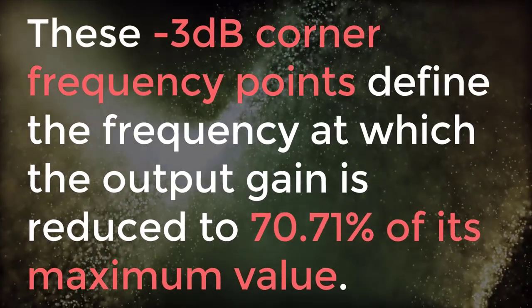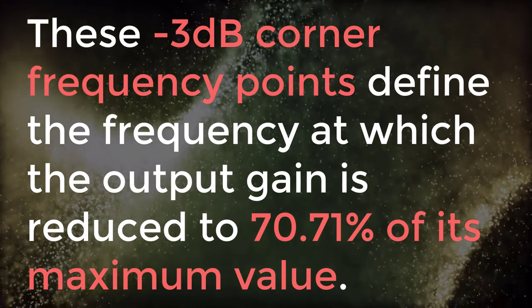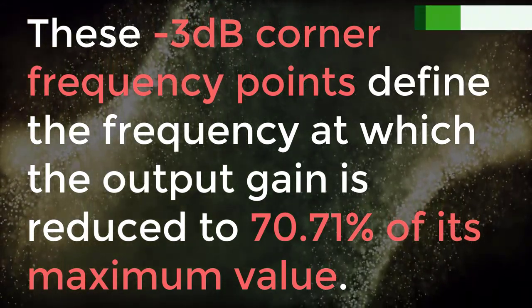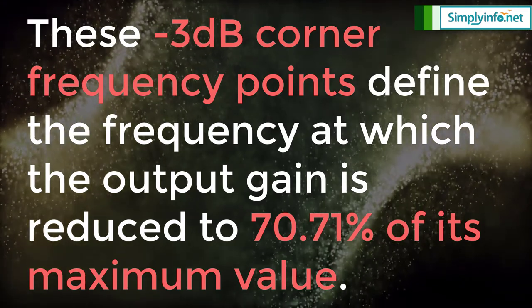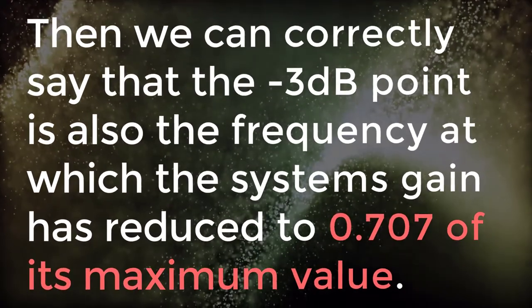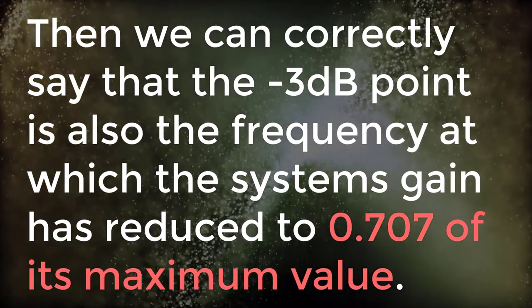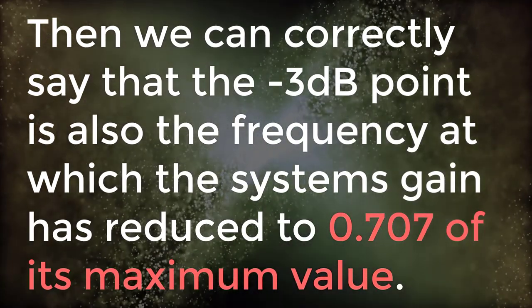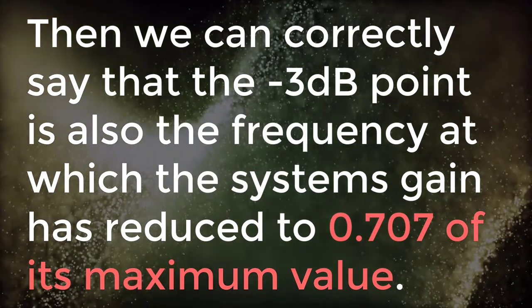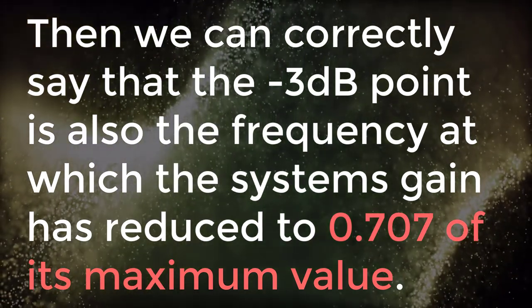These minus 3 dB corner frequency points define the frequency at which the output gain is reduced to 70.71 percentage of its maximum value. Then we can correctly say that minus 3 dB point is also the frequency at which the system's gain has reduced to 0.707 of its maximum value.